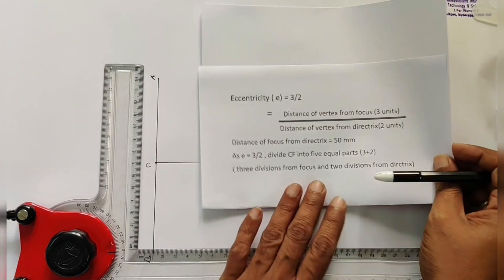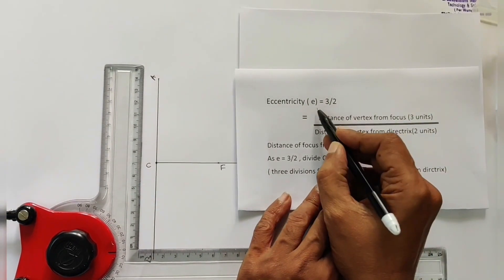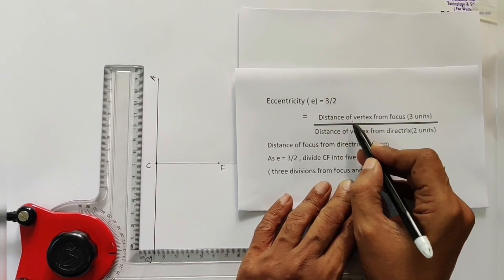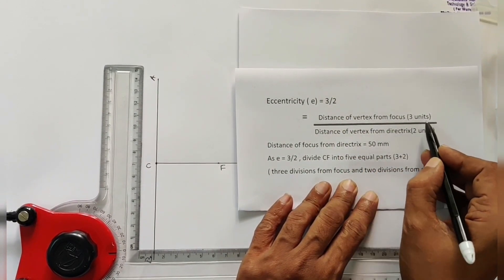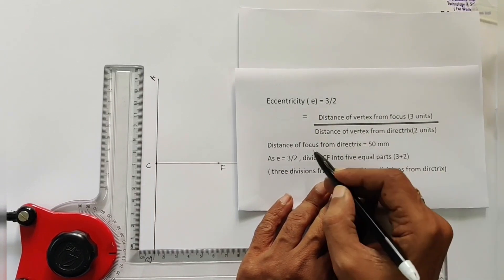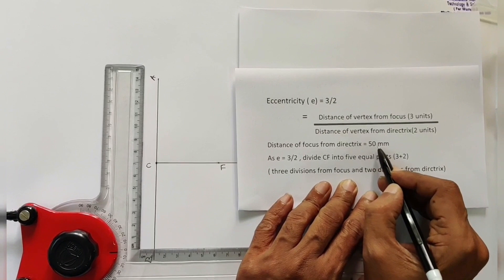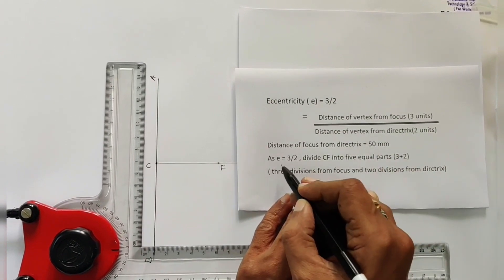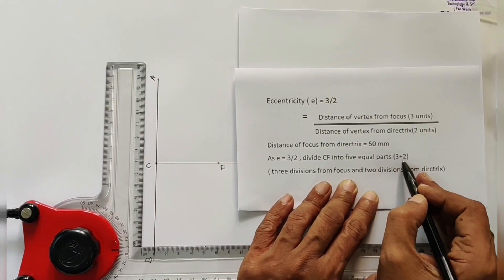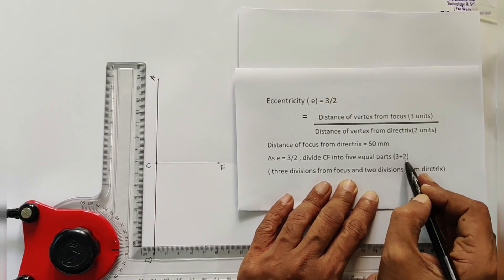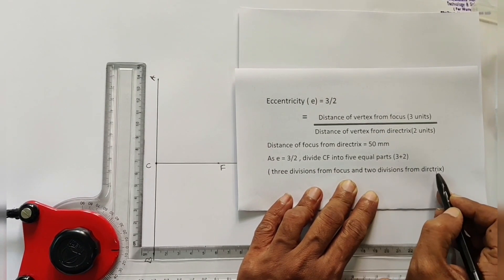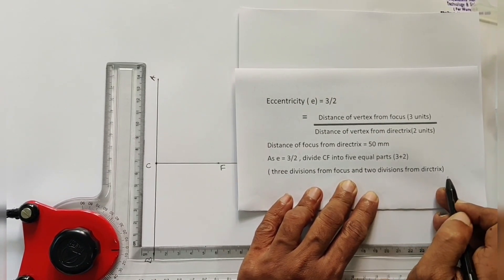Then as given in the problem, eccentricity is equal to 3 by 2, which is equal to distance of vertex from focus is 3 units, distance of vertex from directrix is 2 units. Distance of focus from directrix is equal to 50 mm. As E is equal to 3 by 2, then divide CF into 5 equal parts. That is 3 plus 2 parts. 3 divisions from focus and 2 divisions from directrix. We have to locate the vertex.